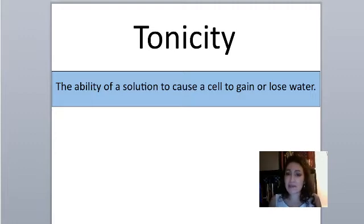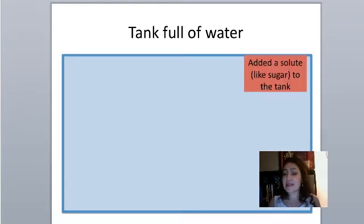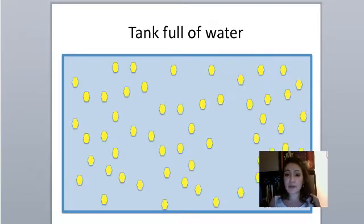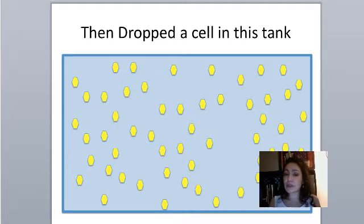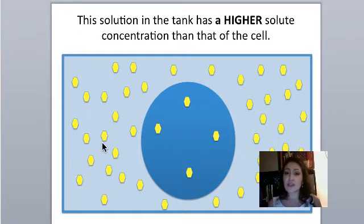Let's take a look at the types of tonicity that exist. Imagine a tank full of water, and inside this tank I add solutes such as sugar. The next thing I'm going to do is drop a cell in this tank. Notice the concentration of the solute inside the tank versus that of inside the cell. The solution in the tank has a higher solute concentration than that of the cell.